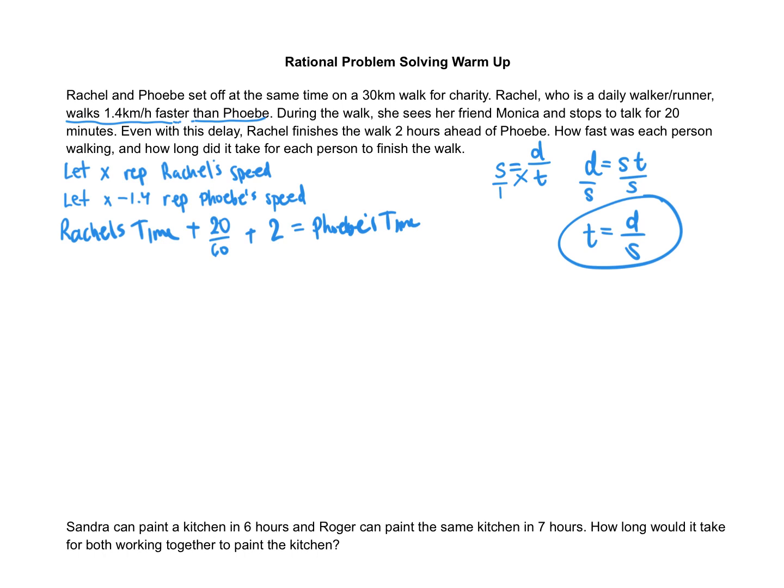So now we can create an equation out of this. Rachel's time will be total distance 30 over her speed x, then we add a third of an hour and we add two hours. And we get Phoebe's time. Phoebe's time is the same 30 kilometers, but her speed is x minus 1.4. Okay, now we have our equation and we're ready to solve.